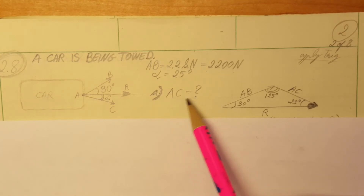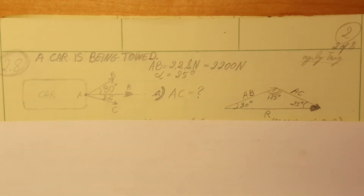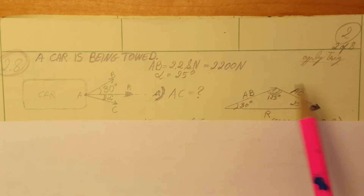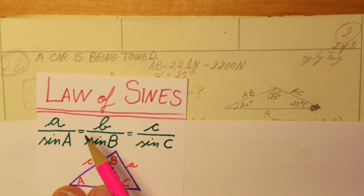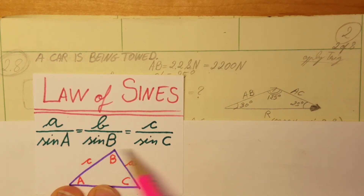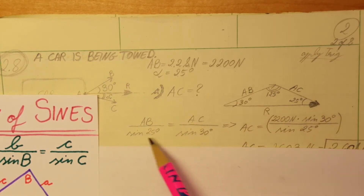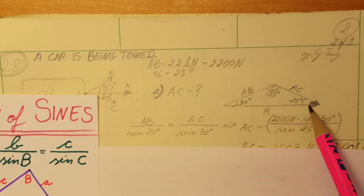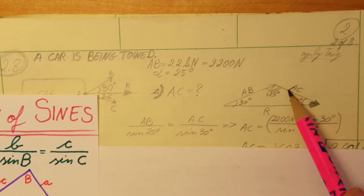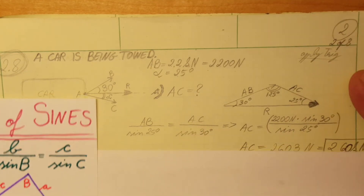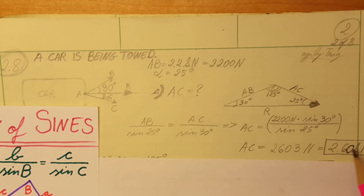In part A, they are asking us to find AC. Looking at our triangle, we know all the angles and we also know AB. So we can use the law of sines: AB over sine of 25 degrees equals AC over sine of 30 degrees. Solving for AC with a calculator, we get AC equal to 2.60 kilonewtons.